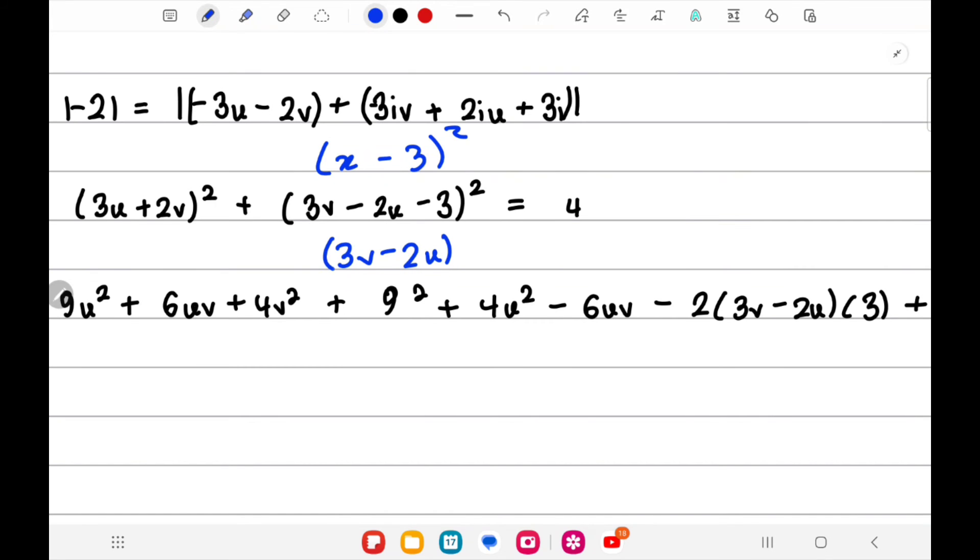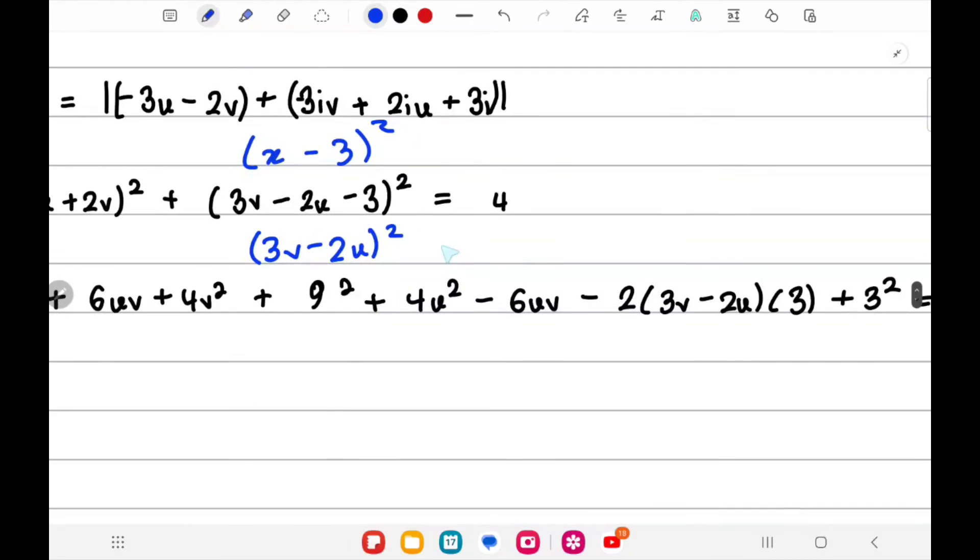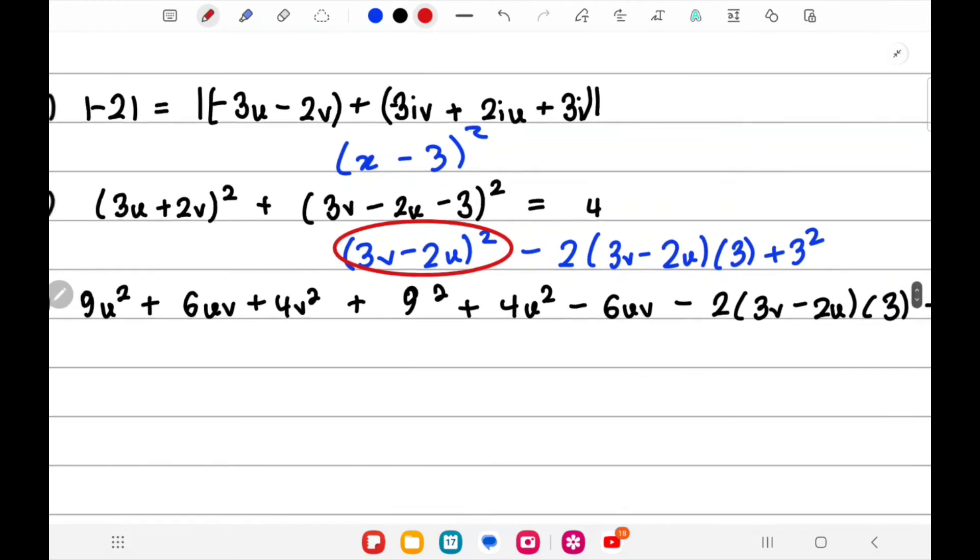You'll get (3v - 2u)² - 2(3v - 2u)(3) + 3² and you can write this as 9, and this would be...